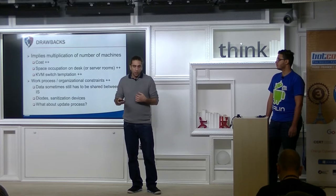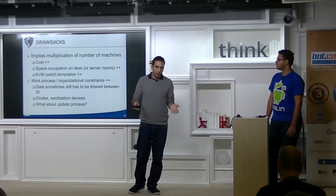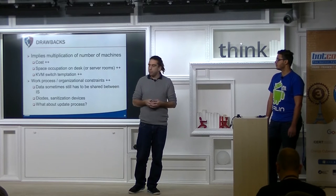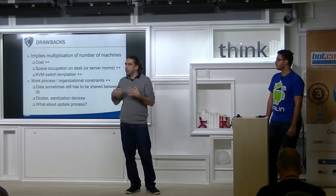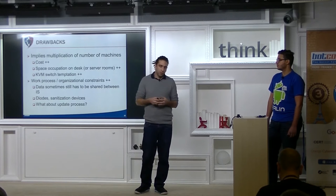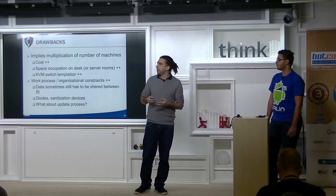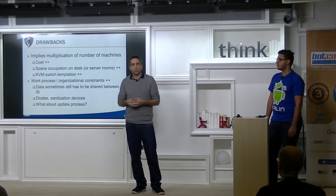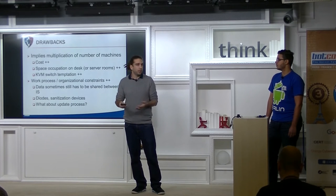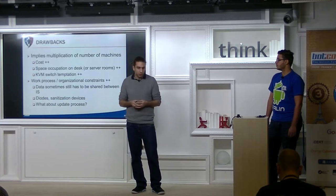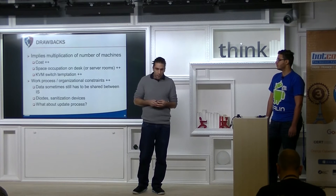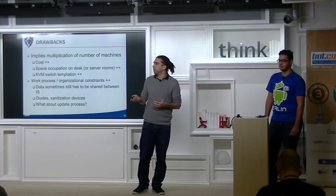A more formal definition: the air gap is a physical isolation of the sensitive information systems. It consists basically of a removal of the communication channels or interfaces between machines from different, less trusted information systems. The goal is to mitigate the risk of interaction between those systems. When you set up an air gap, you face many drawbacks. The first is that it implies a multiplication of infrastructures — you have to duplicate the machines, the networking hardware, and so on. So it costs a lot of money.